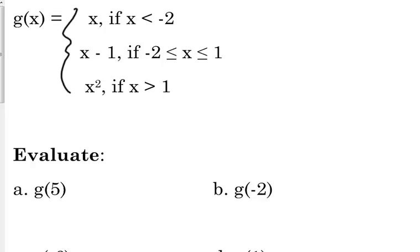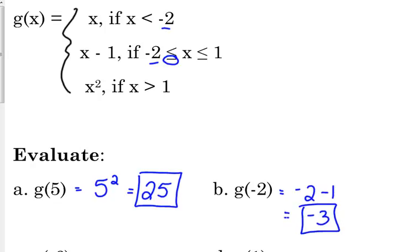g of 5. 5 is, which one does that fall within? Less than negative 2, between negative 2 and 1, or greater than 1? Greater than 1. So we plug it into x squared. So 5 squared is 25. Negative 2. We've got to be careful with this one. I see negative 2 in two places here, but which one should I plug it into? The first one or the second one? The second one, because that's where it equals negative 2. So we've got negative 2 minus 1 for negative 3.